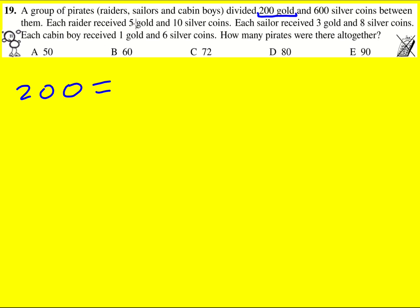So for the raiders they received five gold coins each. That means in total they would receive five R gold coins where R is the number of raiders. And then for the sailors three gold each so in total 3s where s is the number of sailors. And then for cabin boys one gold each so it's just a number of cabin boys. So I've created an equation.